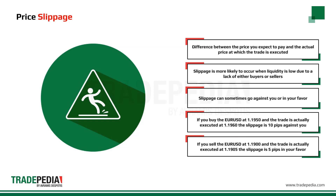If you place a trade to sell the EURUSD at 1.1900 and the trade is actually executed at 1.1950, the slippage is 5 pips in your favor.